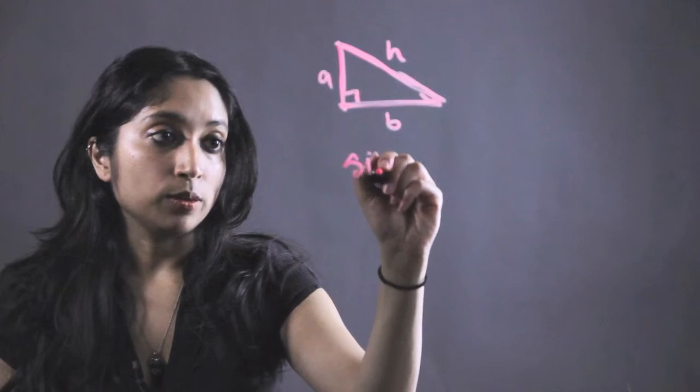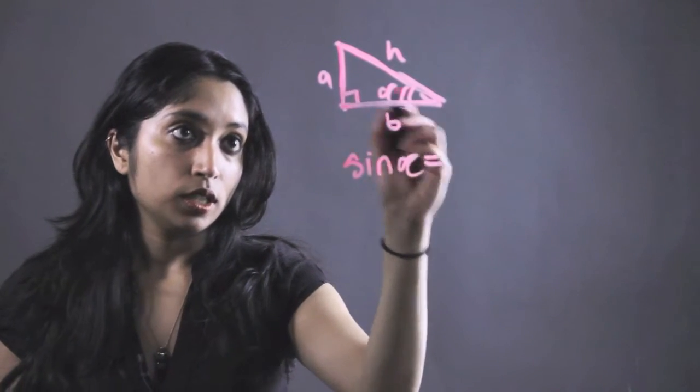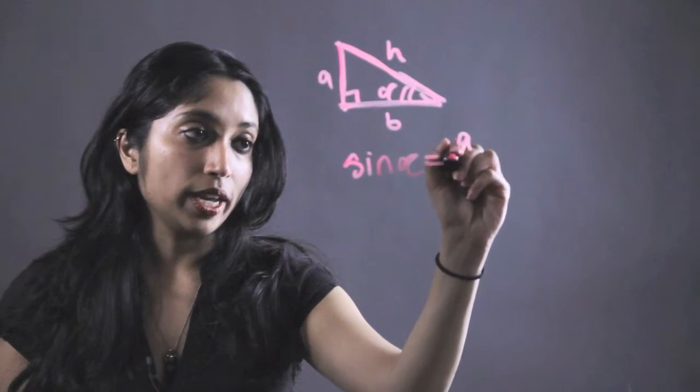So an example of that would just be sine of some angle alpha equals opposite over hypotenuse. So A over H.